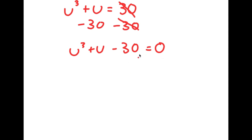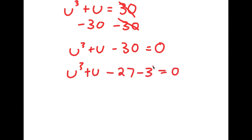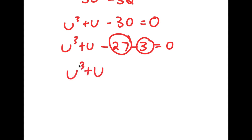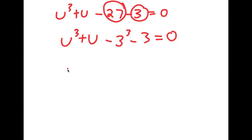We need to find what value of u makes this equation equal to 0. I'm going to rewrite 30 as negative 27 minus 3, because 27 is the same thing as 3 to the power of 3. Notice how we have u to the power of 3 plus u — we can think of u as 3 in this case. So 27 is 3 to the power of 3, and I put this in the form u to the power of 3 minus 3 to the power of 3 plus u minus 3 is equal to 0.